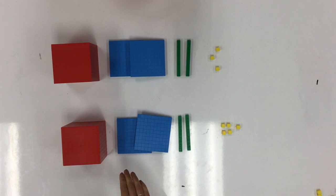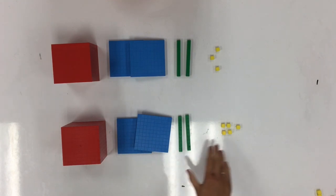So remember, when we're comparing the value of two numbers, always start by looking at the thousands place, then the hundreds place, then the tens, and finally the ones.